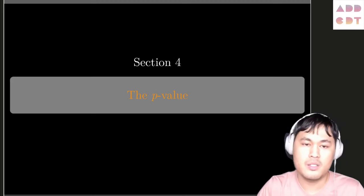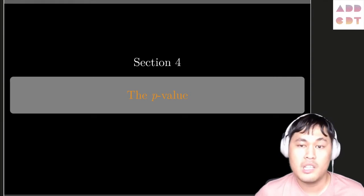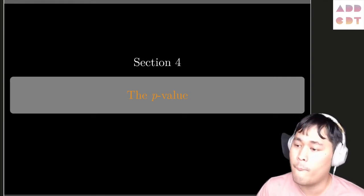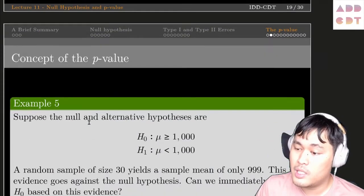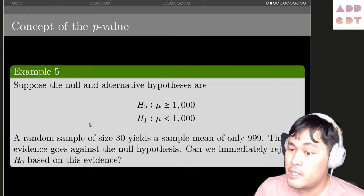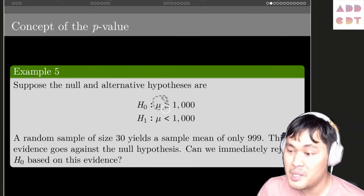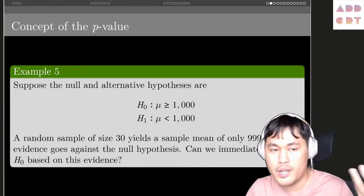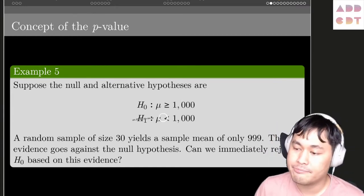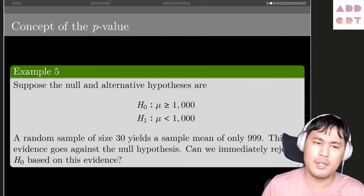Now in this third part, section four, we are going to do the math and use the p-value to help us make a decision. Let's go back to the hypothesis. Suppose we have the null and the alternative hypothesis. We believe in the first place that the average of some setup is 1000, and the alternative is that what we believe is wrong — the average is actually less than 1000.